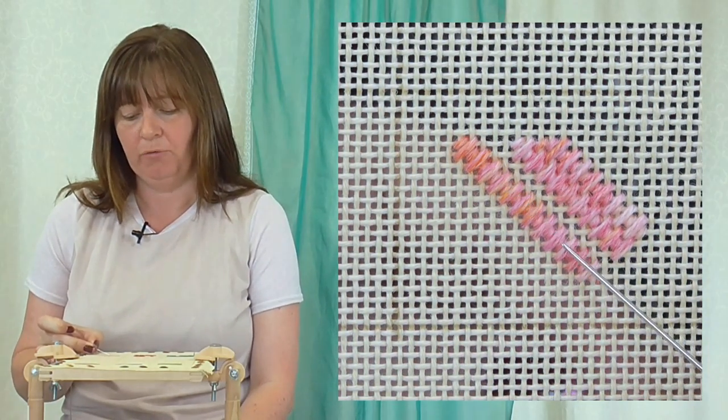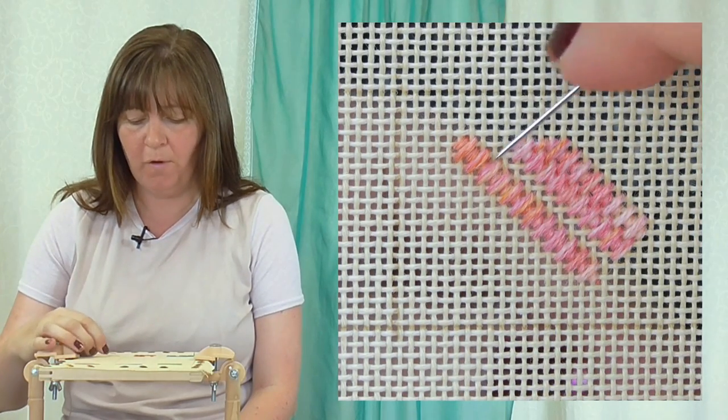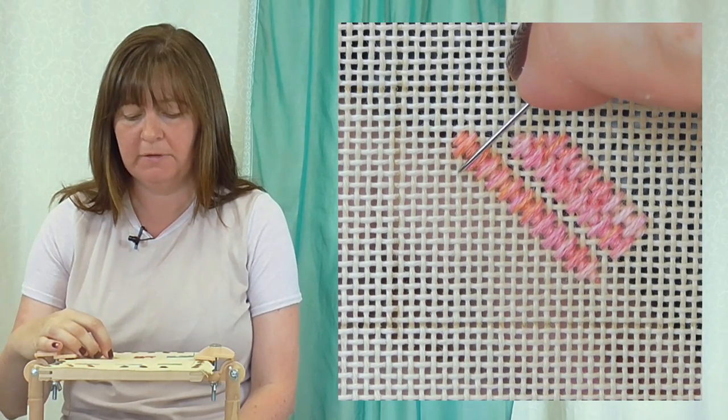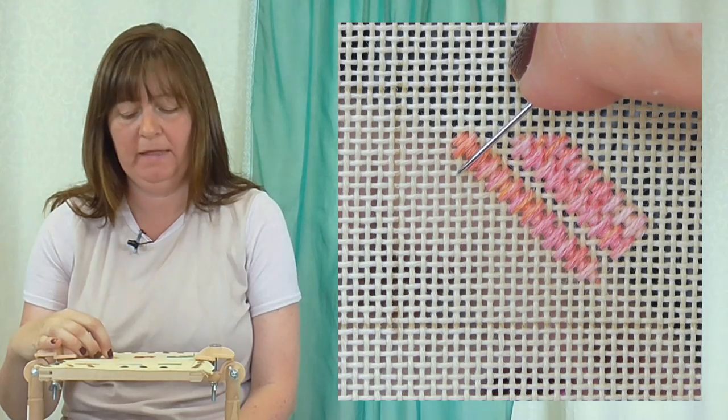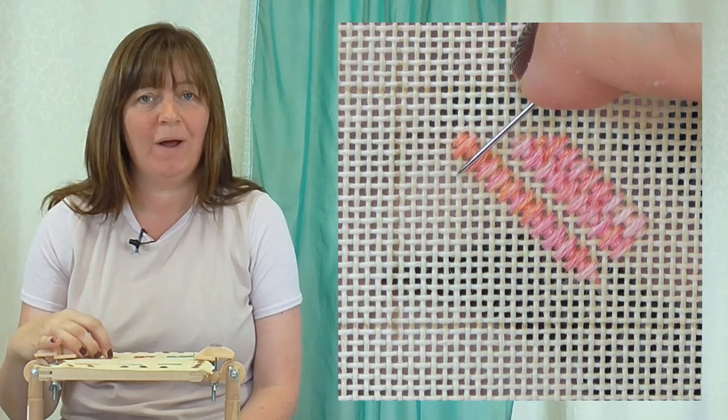This is what it looks like. Here you can see these diagonal rows, and if you just look at one stitch at the top, you can see your mosaic square in there.